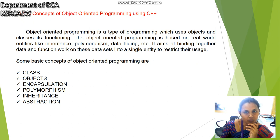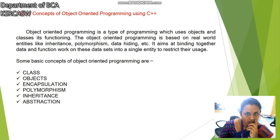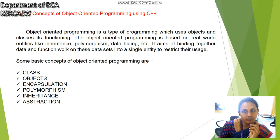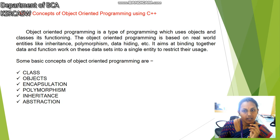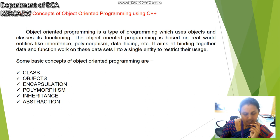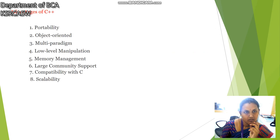Some basic concepts of C++ include classes, objects, inheritance, polymorphism, and data hiding. Some of the basic concepts of object oriented programming are classes, objects, encapsulation, polymorphism, inheritance, and abstraction.